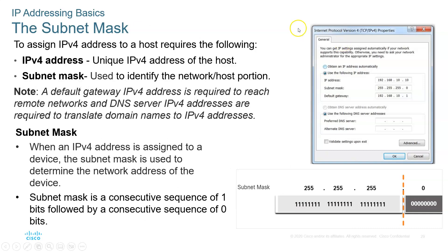A subnet mask tells you: when you get 255, it's telling you this address we don't want to mask. When you put a zero, you want to mask the host portion of the IP. So it tells the router that 192.168.10 is the network, and the host portion is the last number — for example, 10 — which is located in network 192.168.